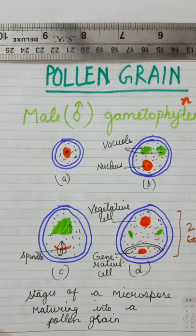This is the development of a pollen grain. What are the stages of a microspore maturing into a pollen grain? Now come to the structure of a pollen grain.